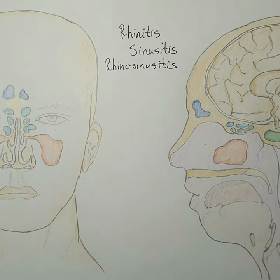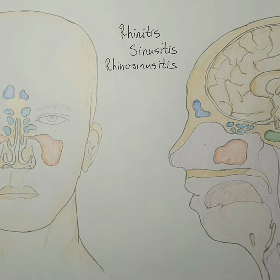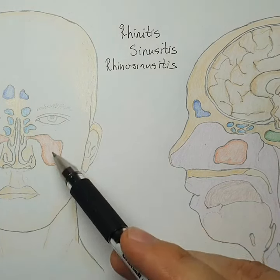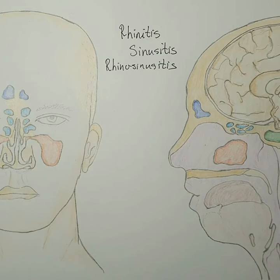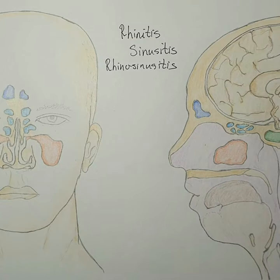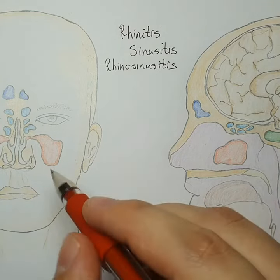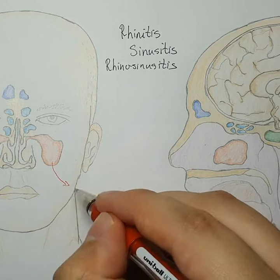Sinusitis is a more complicated inflammation that develops in the sinuses, sometimes called rhinosinusitis depending on how prominent the inflammation is. The sinuses are called paranasal sinuses because they are located on the lateral sides of the nasal cavity and are connected to it. There are four paranasal sinus structures: the largest is the maxillary sinus.